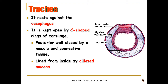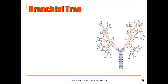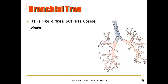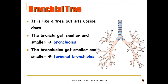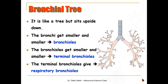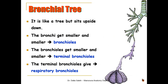Next we have the bronchial tree, which is like a tree held upside down. The bronchi get smaller and smaller to form bronchioles. The bronchioles also get smaller and smaller to form terminal bronchioles, which in turn give rise to respiratory bronchioles.